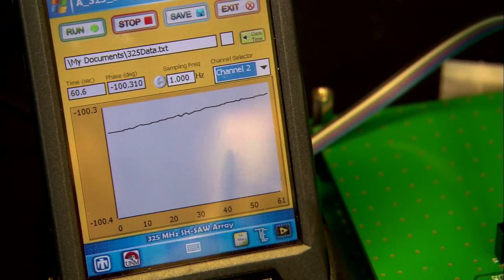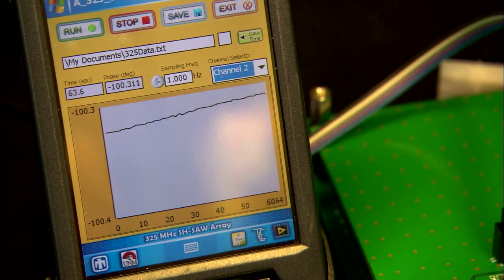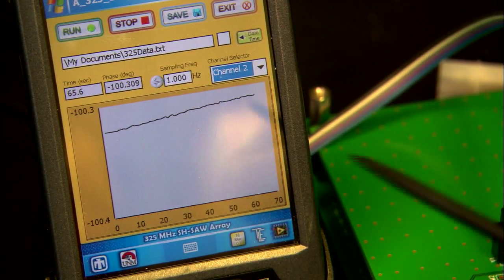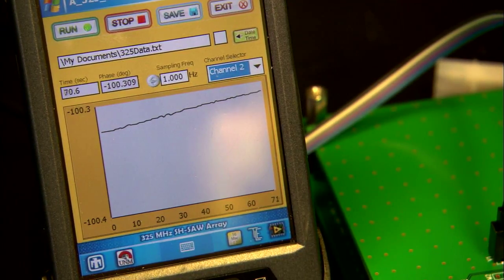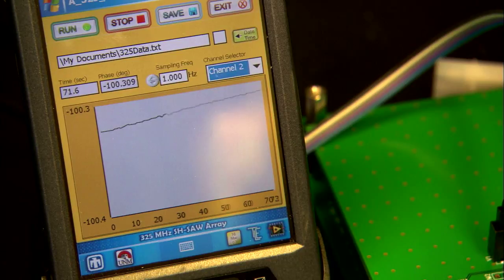As a sample would bind to the surface, we would actually see a shift in the phase, and the degree to which it shifts is proportional to the amount of sample that is bound to the surface.